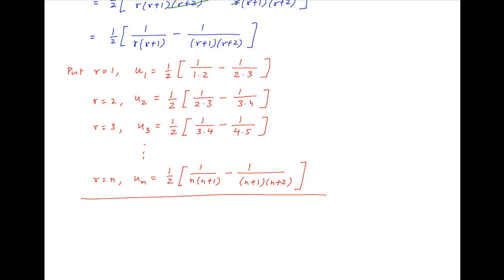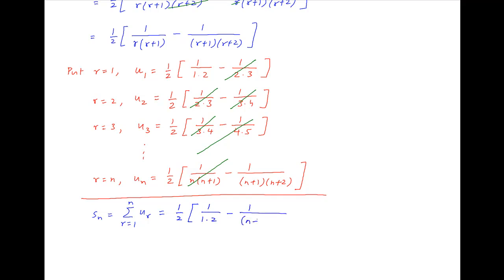Now we add all of these equations. On the left-hand side we get the sum of the first n terms of the given series, denoted by Sn. On the right-hand side, alternate terms cancel and we are left with only two terms, which is therefore equal to half of 1 upon 1 times 2, minus 1 upon n plus 1 times n plus 2.